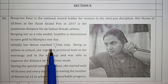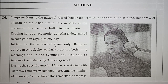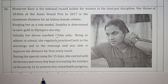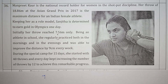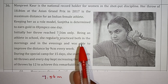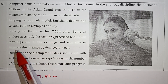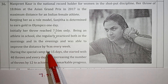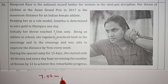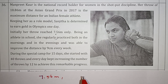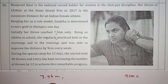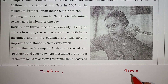Initially, Sanjitha's throw reached only 7.56 meters. Being an athlete in school, she regularly practiced both morning and evening and was able to improve the distance by 9 cm every week. The first number is 7.56 meters. Every week, she improves by 9 cm. We can convert 9 cm to meters: 9 cm equals 0.09 meters.